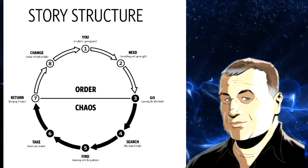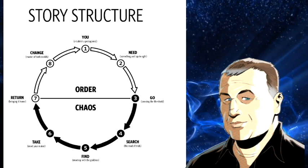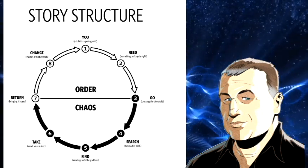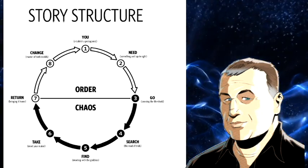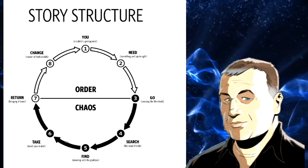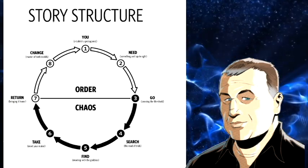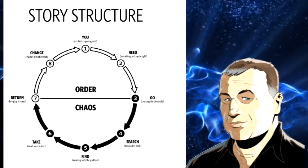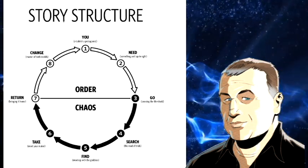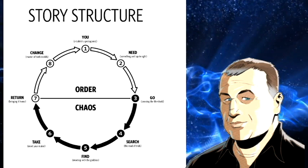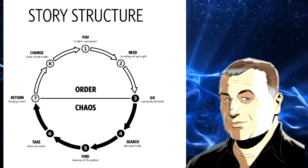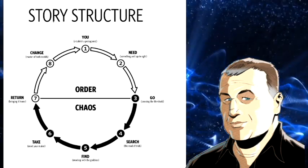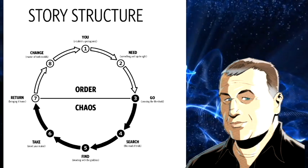He simplified it down and he just had one word to describe each point on the circle. Instead of the known and unknown world, what he has is order and chaos. So in the beginning of the story you have 'you,' which establishes the protagonist, and the character discovers that they need something. There's something that they want because things aren't right. There has to be a change, and so they go to accomplish that change.